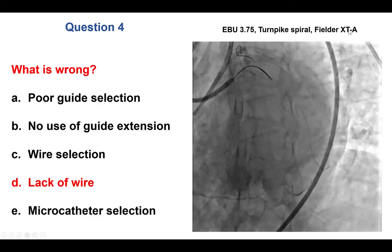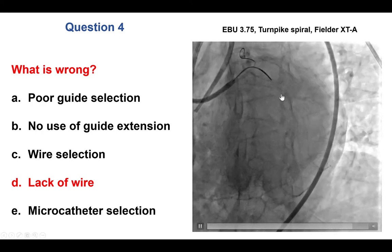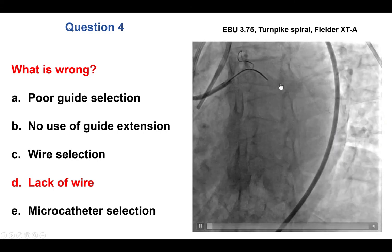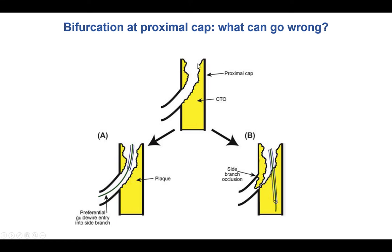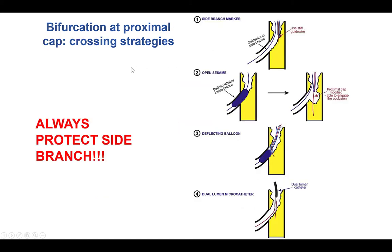Typically, a polymer-jacketed tapered guide wire is the first choice for antegrade wire escalation. However, we have a bifurcation at the proximal cap in this CTO. Challenges include the guide wire potentially going into the side branch, or if it goes into the CTO, causing plaque shift and side branch compromise. The hallmark of all strategies for tackling a bifurcation at the proximal cap should be to insert a safety wire into the side branch, then inflate a balloon to deflect the wire or use a dual-lumen microcatheter.